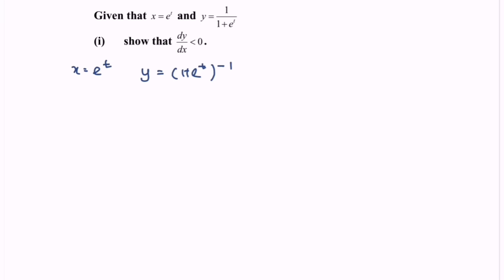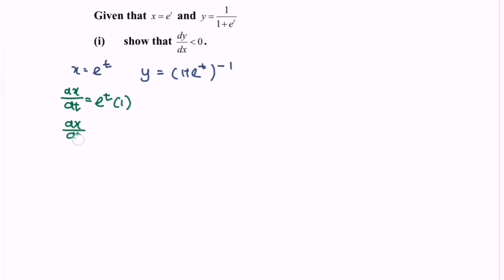So now what we have to do is to find dy/dx. First step, differentiate x with respect to t. dx/dt is equals to e to the power of t. Focus on the power, differentiate it with respect to t and we will have 1. So dx/dt is equals to e to the power of t.